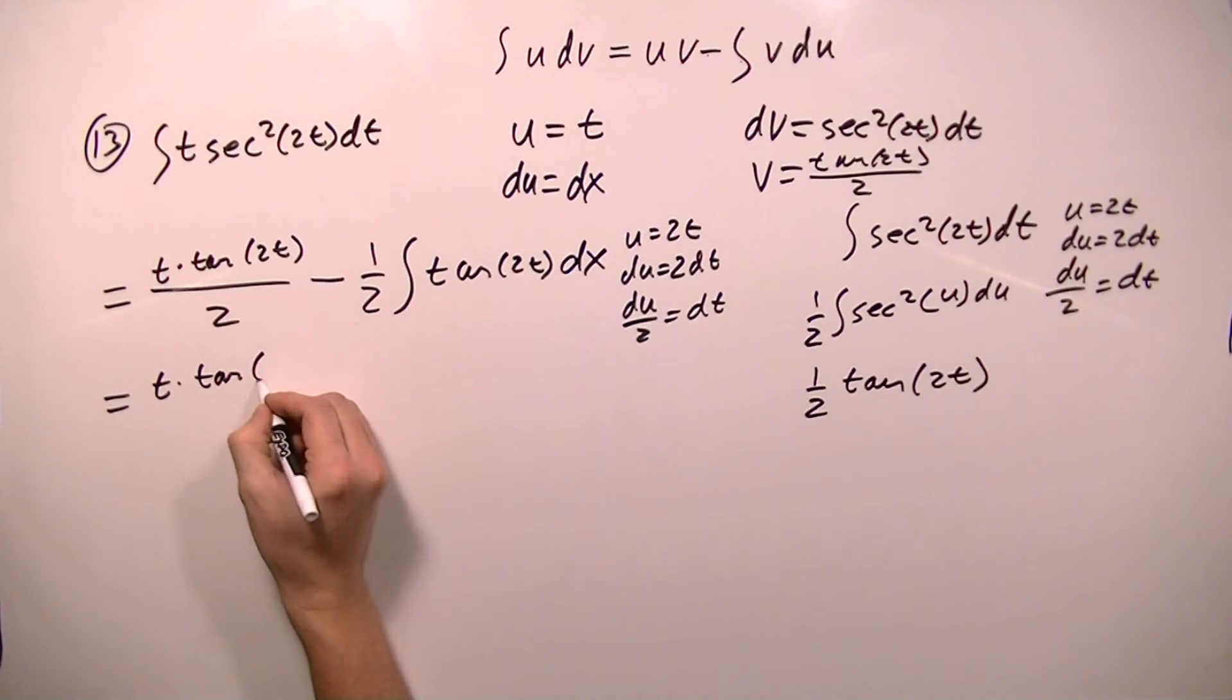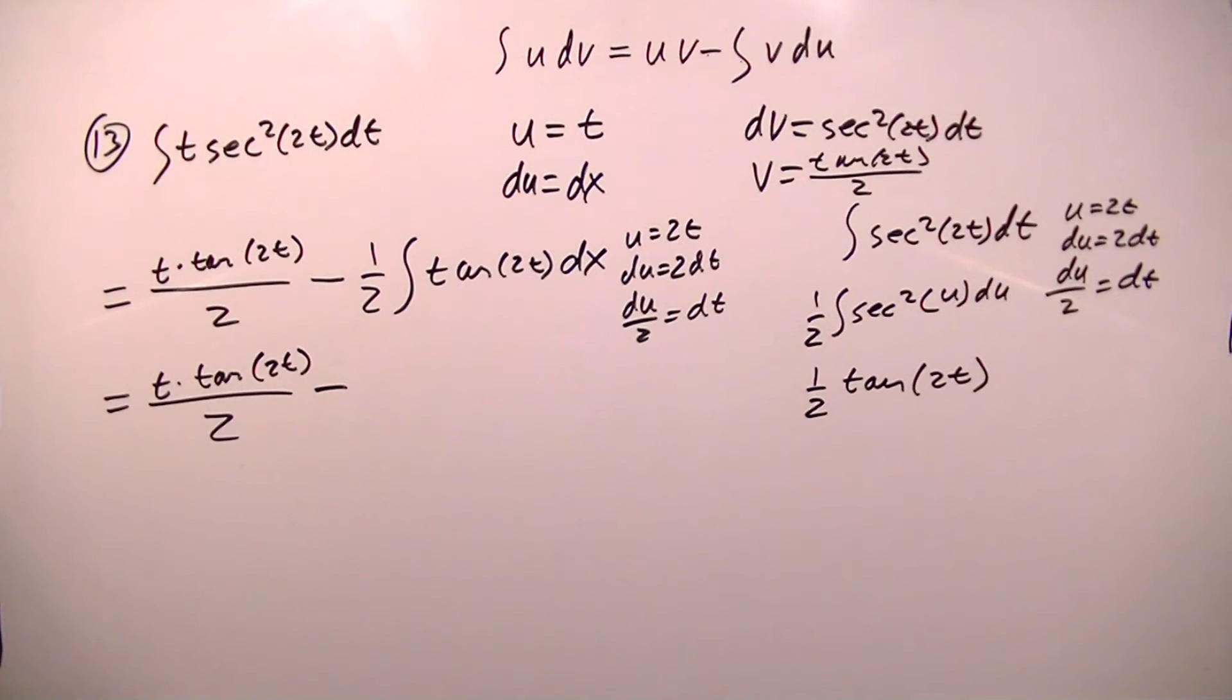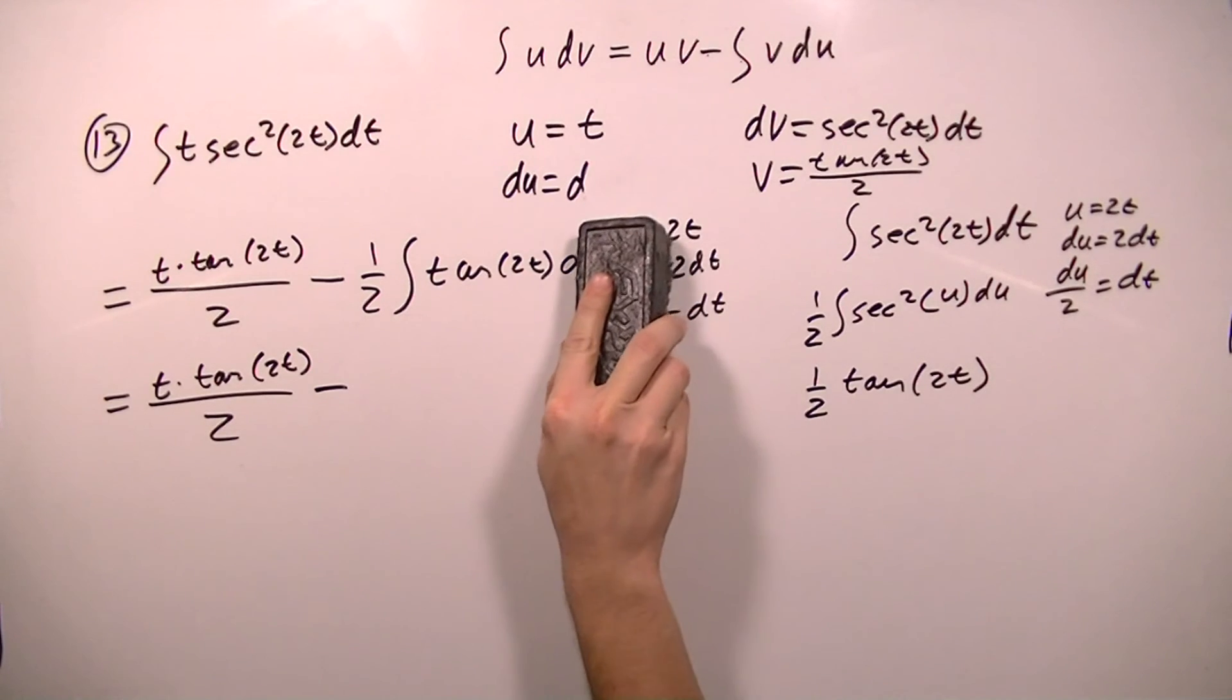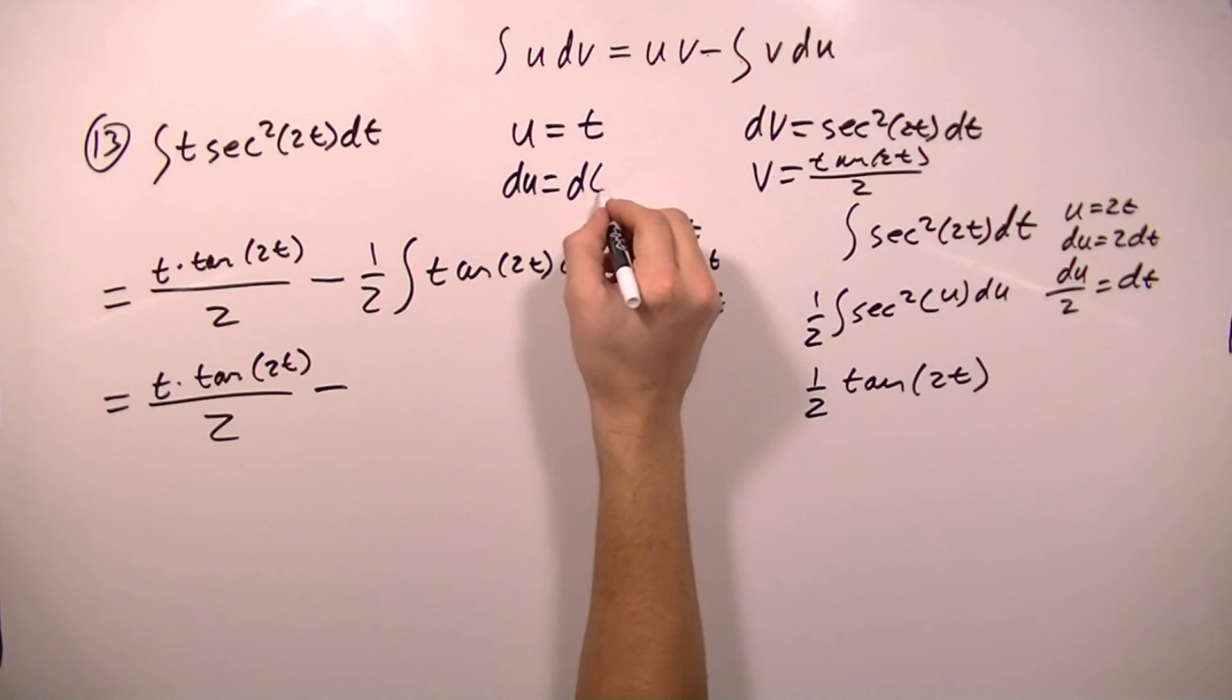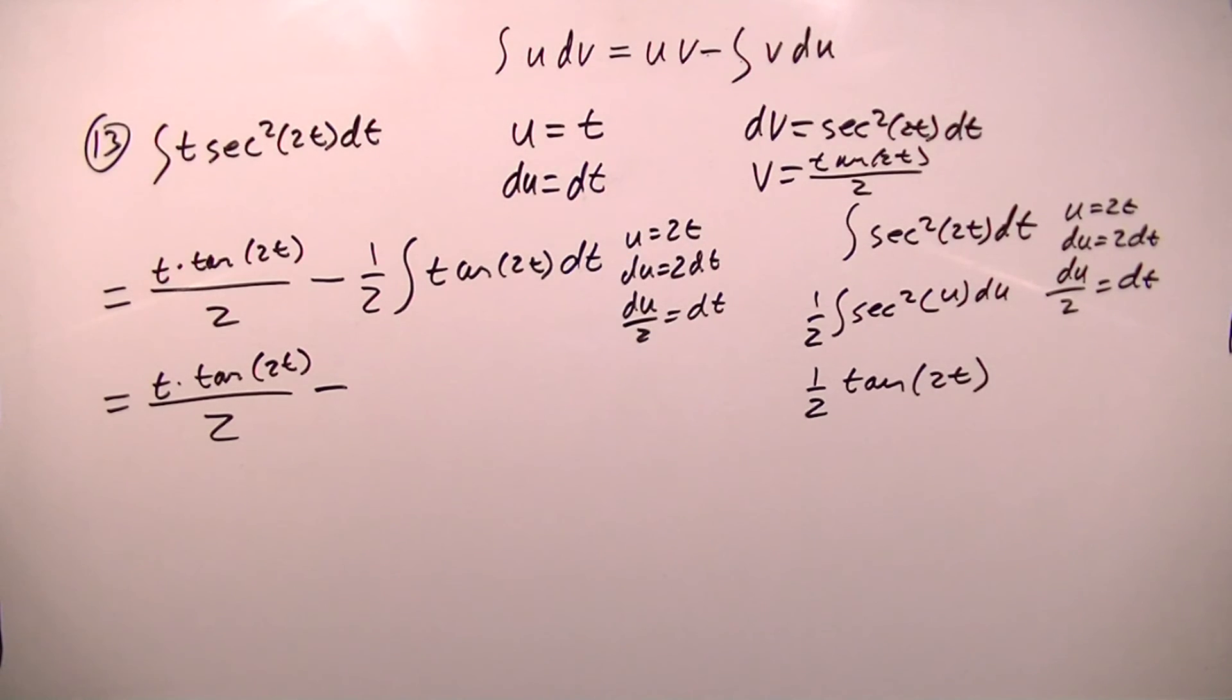So I'm going to write this back out and make my substitutions. I get t tangent 2t over 2 minus, and I've made a mistake here. These are supposed to be dt, not dx. So these are dt. So this dt equals du over 2. I'm going to factor this over 2 out. So that's going to make this 1 over 4.